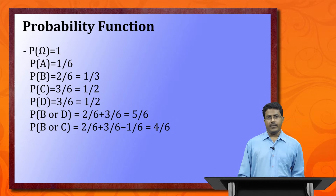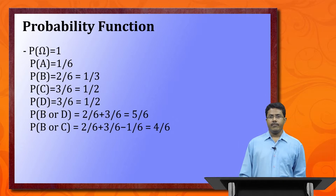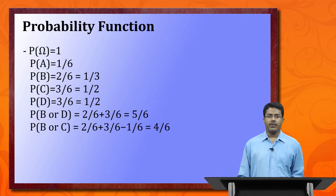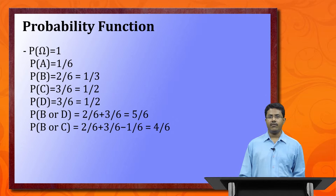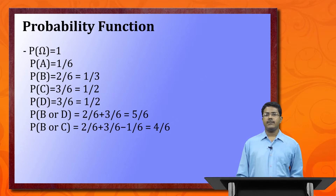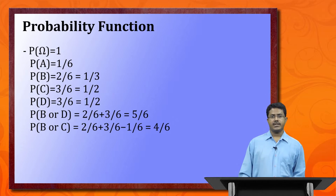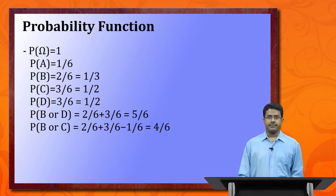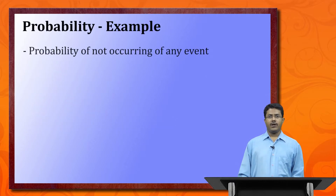For P(B or D), we check if the events are disjoint or overlapping. B = {2, 4} and D = {1, 3, 5} share no elements, so they are disjoint. P(B ∪ D) = 2/6 + 3/6 = 5/6. For P(B or C), B = {2, 4} and C = {2, 5, 6} overlap at element 2. So P(B ∪ C) = P(B) + P(C) − P(B ∩ C) = 4/6. This is known as overlapping events.